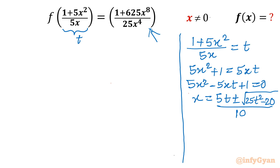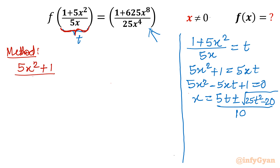So we will apply one trick — a smarter approach or method. Let me write that tricky method. We will rewrite our functional variable. The function argument is (5x² + 1)/(5x).